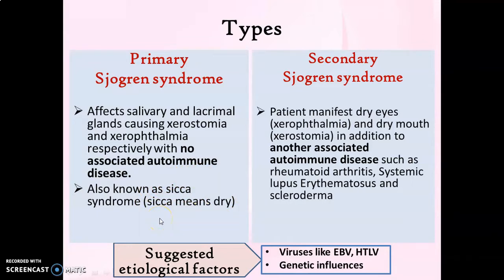Etiology of Sjögren's syndrome is not very clear, but it is suggested that viruses like Epstein-Barr virus and human T-cell lymphotropic virus may cause this condition. It is also found to have some genetic influences, because relatives of affected patients have an increased frequency of other autoimmune diseases. Since this familial tendency is present, genetic influence is also proposed as an etiological factor.